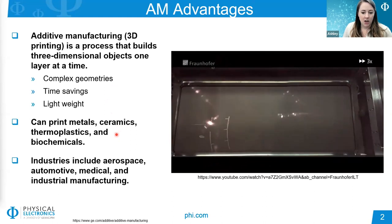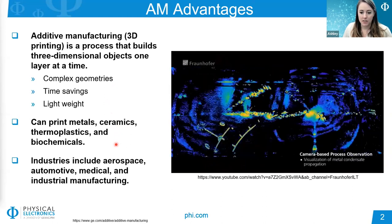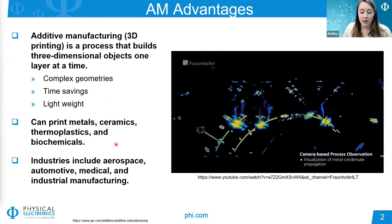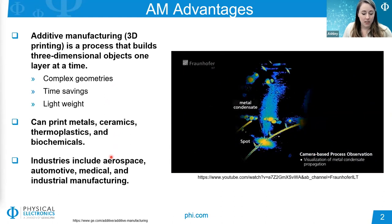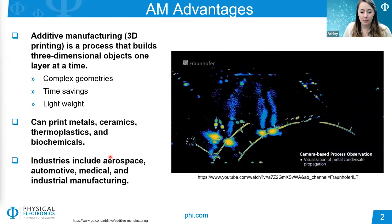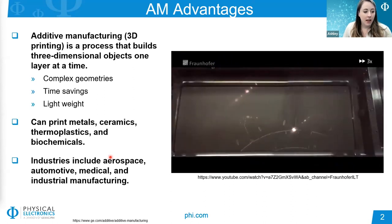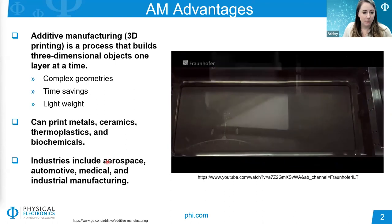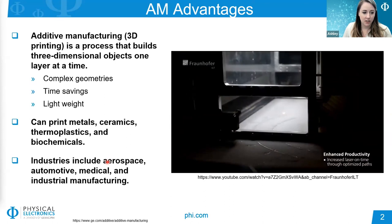Industries that currently benefit from additive manufacturing include aerospace, where lighter parts with complex geometries can be made; the automotive industry, where rapid prototyping cuts down on manufacturing time; medical applications, where parts can be tailored to the individual patient; and industrial manufacturing, where products can be developed with designs that were previously hindered by traditional manufacturing constraints.